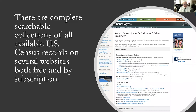There are complete searchable collections of all available census records on several websites. The National Archives lists a few of those — here's a screenshot from the National Archives website showing places to search the 1940 US census. One problem is that not all copies of the census are created equal. In fact, there are copies that have been altered considerably for what they call readability, and a lot of information contained on those early census records has been lost with certain digital copies.